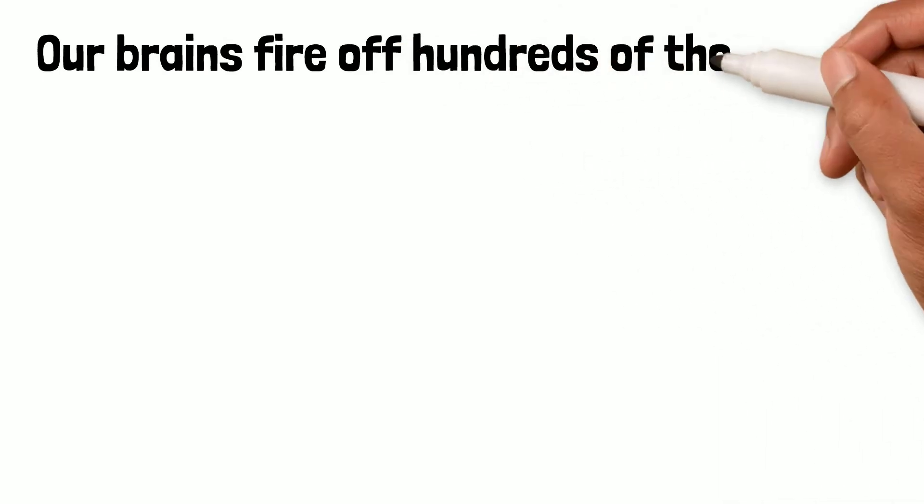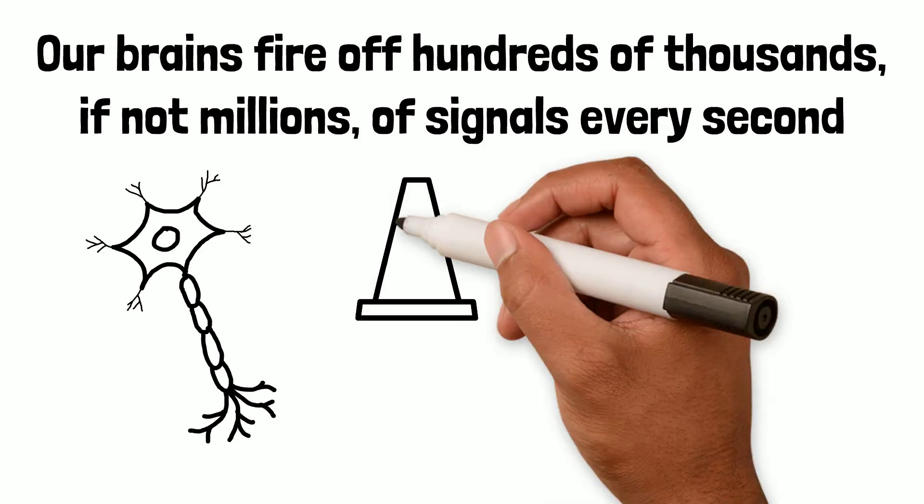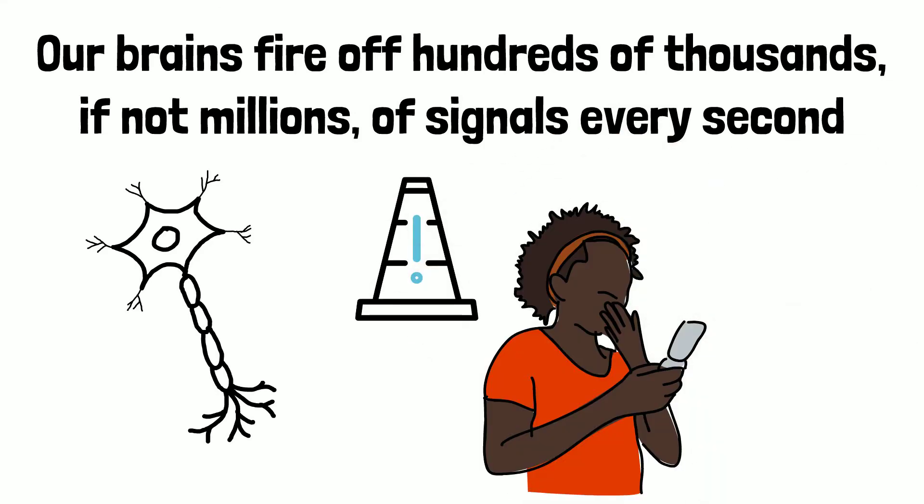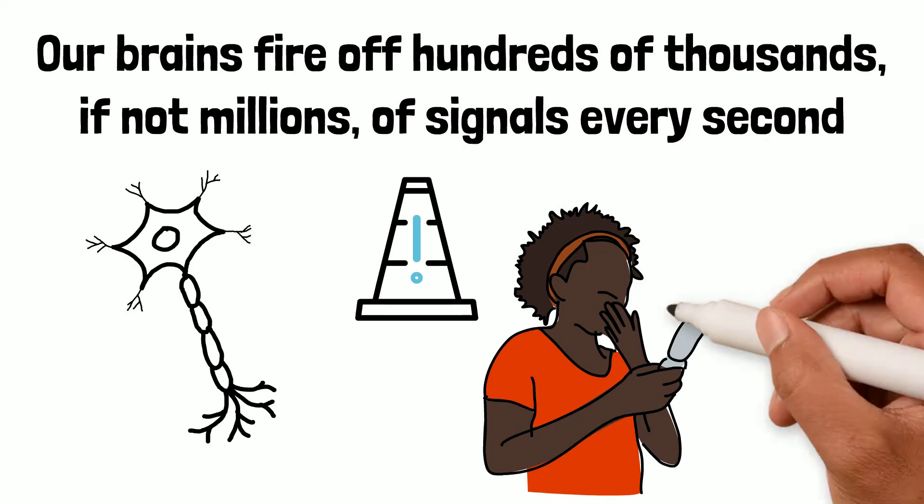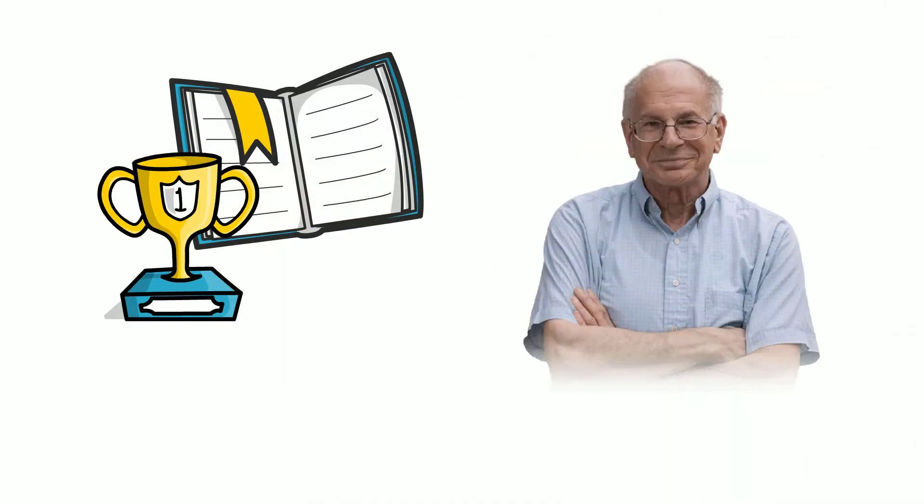Our brains fire hundreds of thousands, if not millions, of signals every second. The smallest interruption, such as a text message appearing on your phone screen, is enough, according to Brian Tracy, to impulsively change your thought processes.